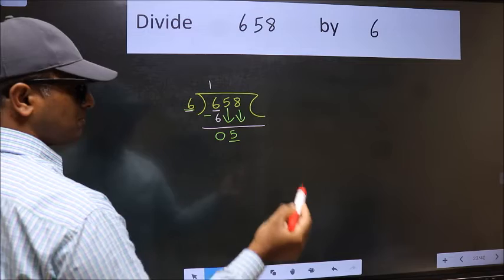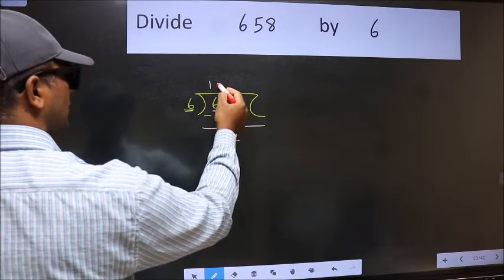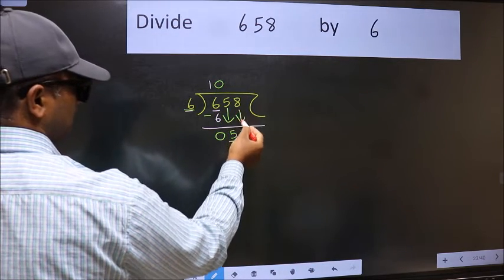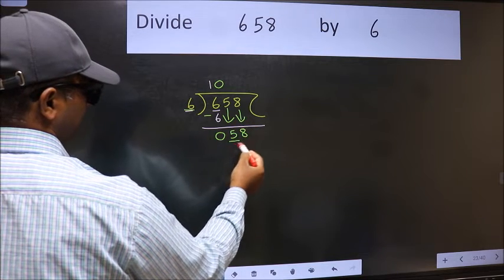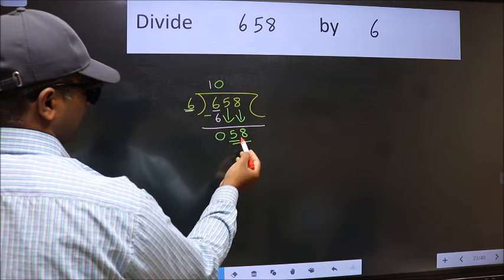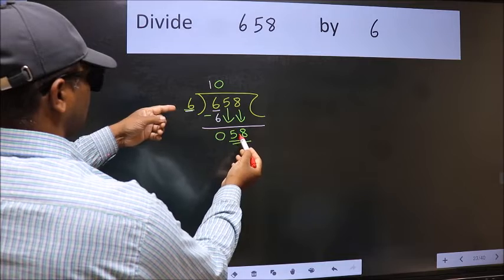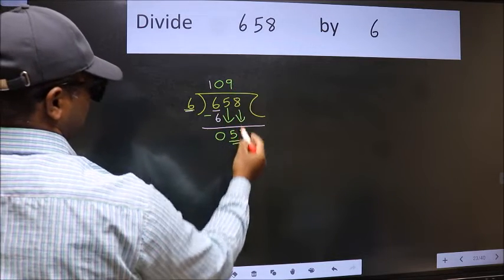And the rule to bring down the second number is: we should put 0 here. Then only we can bring this number down. Now 58. A number close to 58 in the 6 table is 6 nines 54.